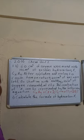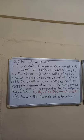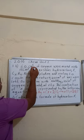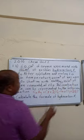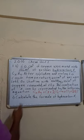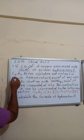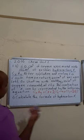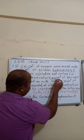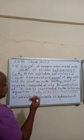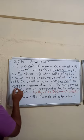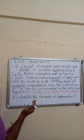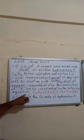Question 1b says: 60 cm³ of oxygen reacting with 10 cm³ of hydrocarbon X, in the form CₓHᵧ. After the reaction was completed, 40 cm³ of gas remained, and after shaking with sodium hydroxide, 10 cm³ of oxygen gas remained.